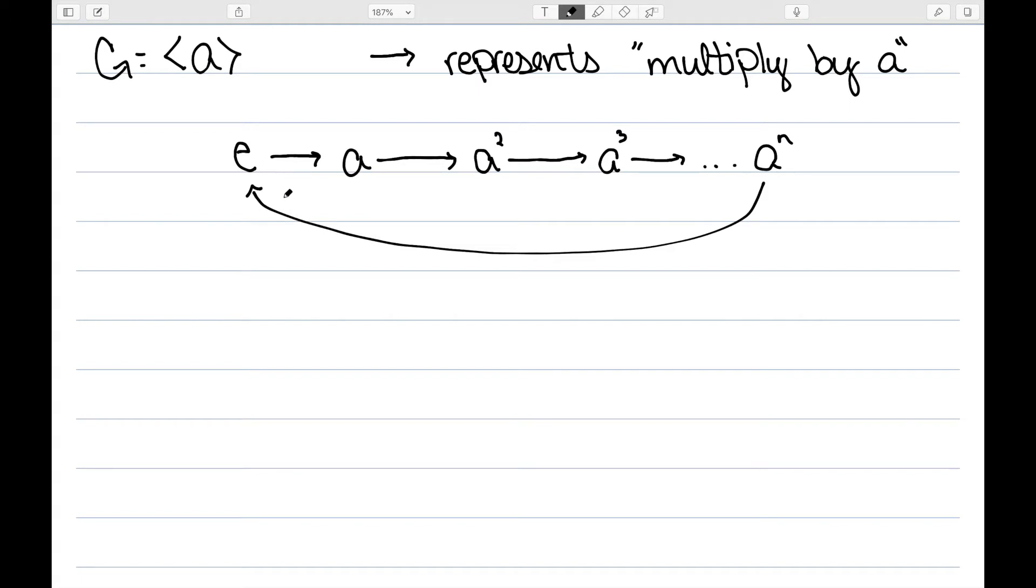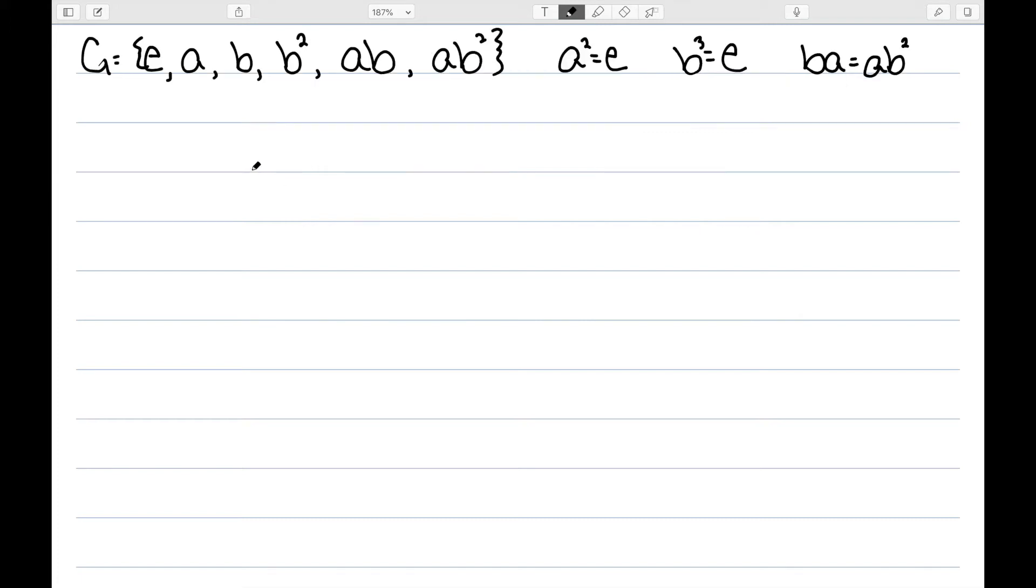And if the group has two generators like A and B, then we need two kinds of arrows. Let's consider this group. We built the group table for this in a previous video. To start with, I'm going to start laying out some of my group elements like E, B, and B squared. I also want to have an A, which I'm going to put here. I need an AB. And I need an AB squared.